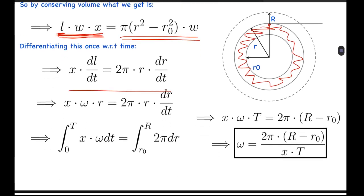Separating variables and integrating, I have integrated here from zero to time T, which is the total time of winding. So here the radius will vary from r0 to R. From here we get the value of omega, the angular velocity of the spool, to be 2π(R - r0)/(x·T), where T is the total time.